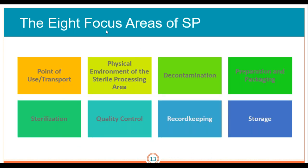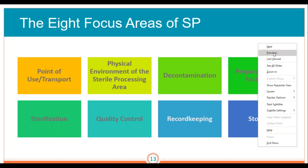These are the eight focus areas of SPD: point of use and transport, physical environment of the sterile processing area, decontamination, preparation and packaging, sterilization, quality control, record keeping, and storage. These are all the areas you want to make sure you're focusing on when you're studying.